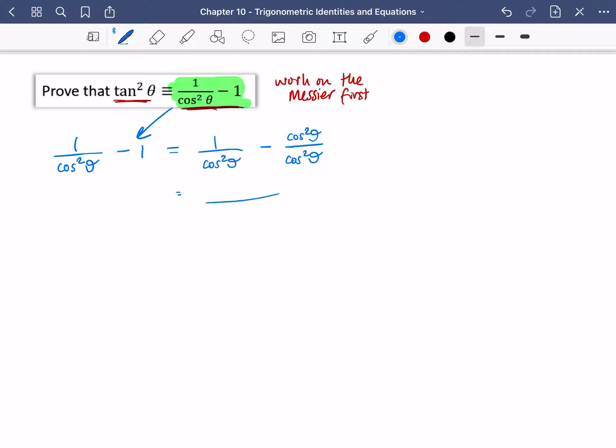Now they have a common denominator. I can write cos squared theta. And on the numerator, I've got 1 minus cos squared theta. Putting those together. 1 minus cos squared theta. Hopefully you've recognized 1 minus cos squared theta is one of the things we need to memorize. It is sine squared theta. So we have sine squared theta over cos squared theta.